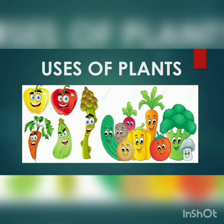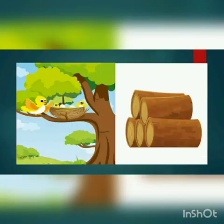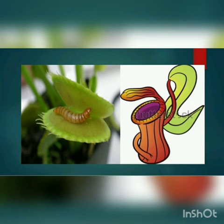Uses of plants: plants give us fruits and vegetables, they give us shade, they provide us medicines, birds make their nests on the trees, and trees give us wood. There are some plants which eat insects — these plants are called carnivorous plants, like Venus flytrap and pitcher plant.